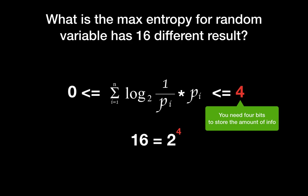Then, what if your random variable has 16 different results? Well, the answer is 4 since 2 to the power of 4 is 16.